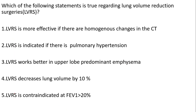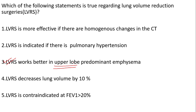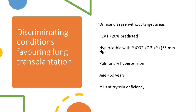This is another question from COPD — read it carefully before we get into the solution. The correct answer is that lung volume reduction surgeries work better in upper lobe predominant emphysema. Keep these guidelines as part of your preparation to score good marks in MRCP. Key points: lung volume is decreased by only 20 to 30%; heterogeneous disease with apical target areas is preferred; FEV1 has to be more than 20% predicted; and it is preferred at an older age, 60 to 70 years. For lung transplantation, it is preferred where there is diffuse disease without specific target areas, more advanced disease, an element of hypercarbia, pulmonary hypertension, younger patients, or underlying alpha-1 antitrypsin deficiency.